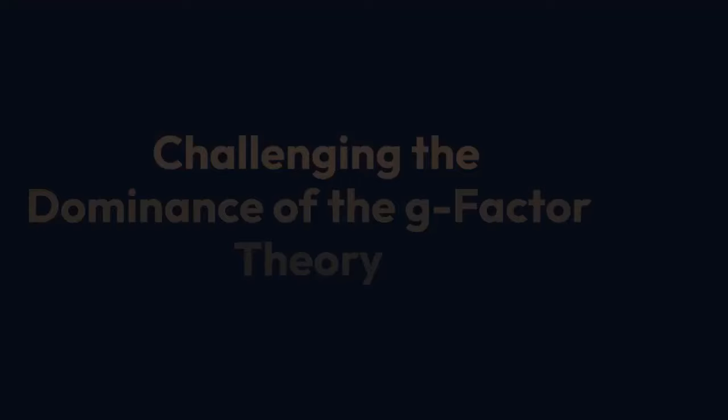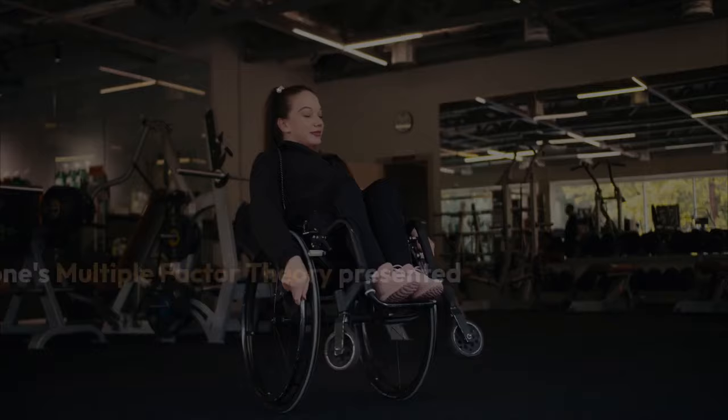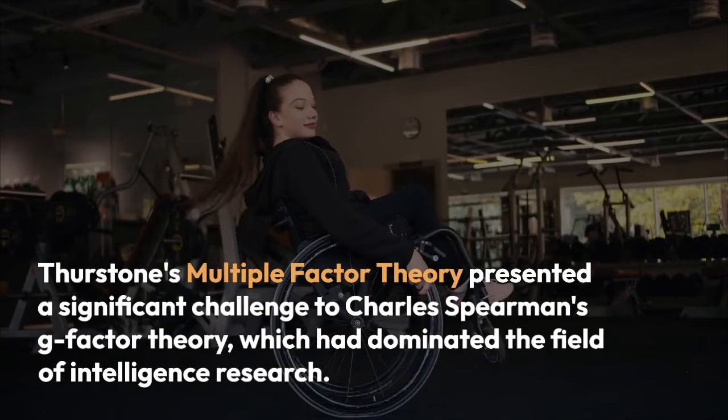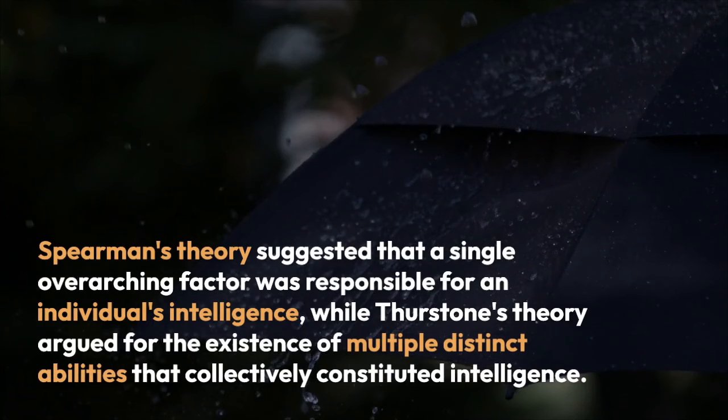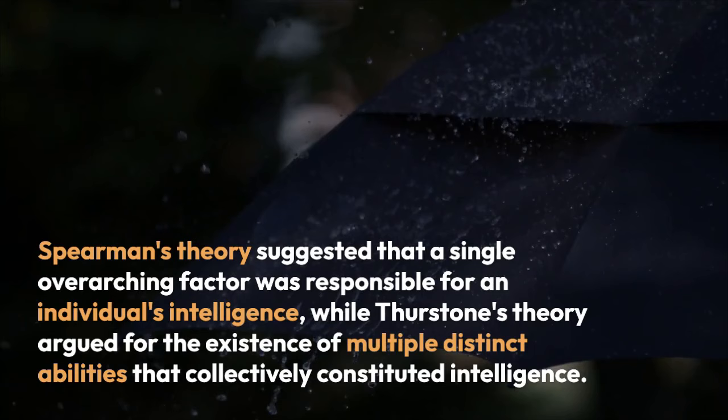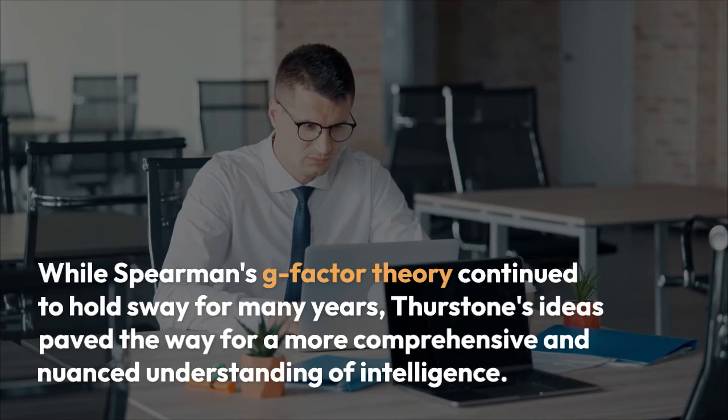Challenging the Dominance of the G-Factor Theory. Thurstone's multiple-factor theory presented a significant challenge to Charles Spearman's G-factor theory, which had dominated the field of intelligence research. Spearman's theory suggested that a single overarching factor was responsible for an individual's intelligence, while Thurstone's theory argued for the existence of multiple distinct abilities that collectively constituted intelligence. The debate between these two theories was fierce and captivated the attention of psychologists and researchers. While Spearman's G-factor theory continued to hold sway for many years, Thurstone's ideas paved the way for a more comprehensive and nuanced understanding of intelligence.